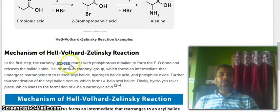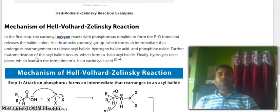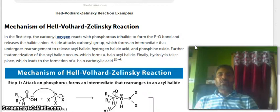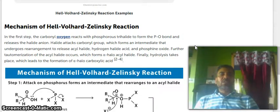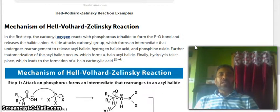Molecular reactions have their mechanism. In the first step, the carbonyl oxygen reacts with phosphorus trihalide to form the phosphorus oxygen bond and release the halide anion. Halide attacks carbonyl carbon which forms an intermediate that undergoes rearrangement to release acyl halide, hydrogen halide acid and phosphine oxide. Further, tautomerization of the acyl halide occurs which forms alpha-halo acyl halide. Finally, hydrolysis takes place which leads to the formation of alpha-halo carboxylic acid.